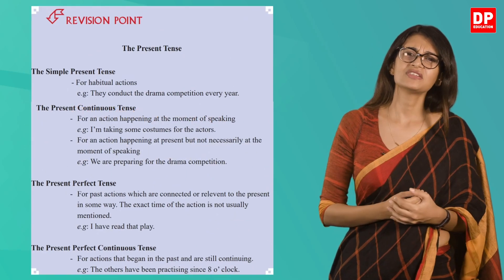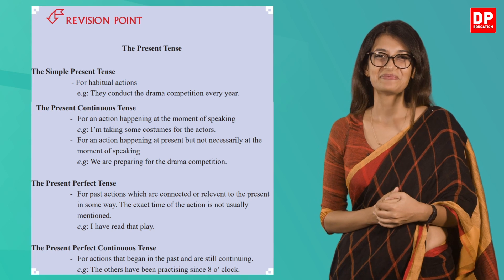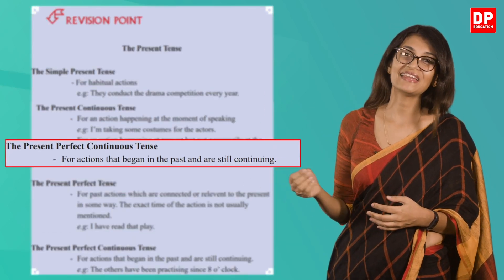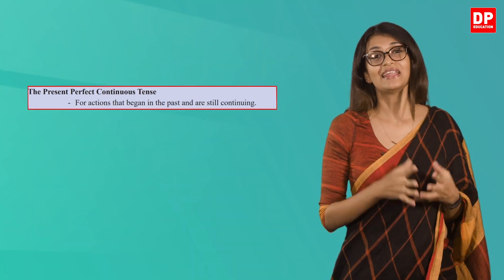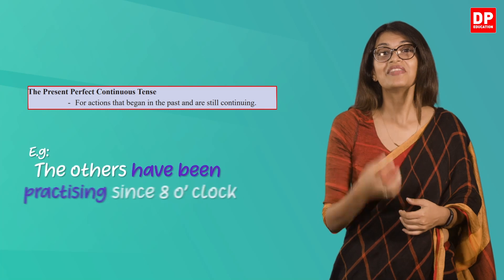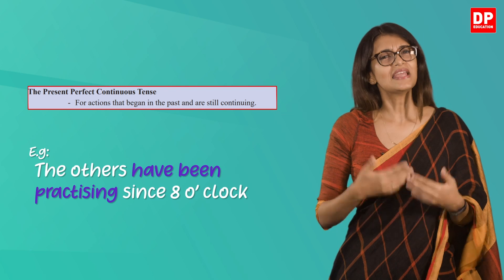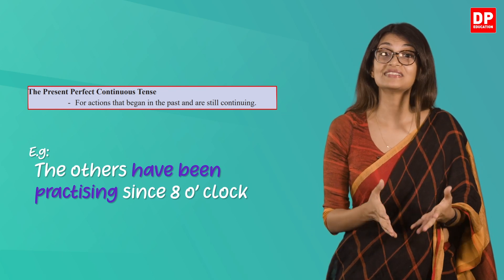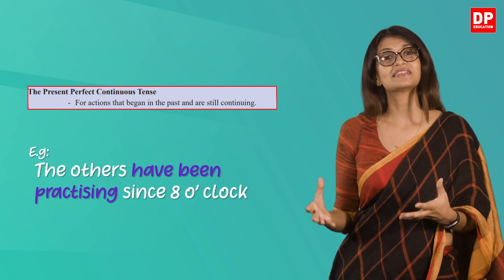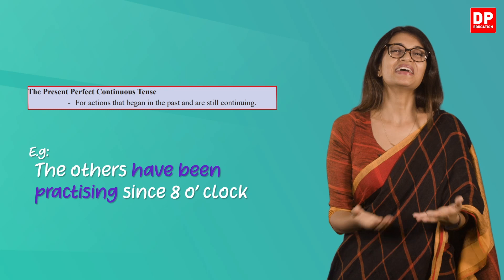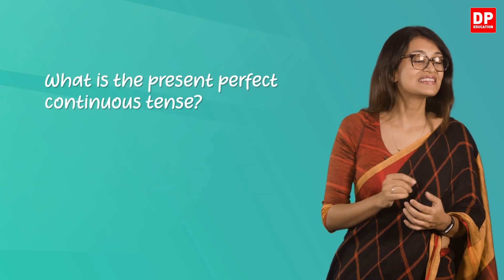Let's look at the definition given about the present perfect continuous tense. It says: for actions that began in the past and are still continuing. They have also given an example: 'The others have been practicing since eight o'clock.' The words in bold depict the present perfect continuous tense, showing that the others were practicing in the past and continue to do so in the present as well.